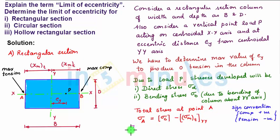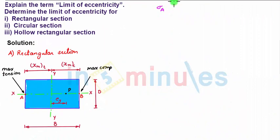For zero tension to be produced in column, sigma A should be greater than or equal to zero. Substituting this condition, we can write sigma A equals P by cross-sectional area A minus bending stress, which is bending moment P times ey upon Iyy times xmax of tension. Sigma A should be greater than or equal to zero.